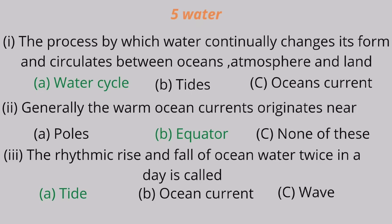Question 2: Generally, the warm ocean currents originate near A. poles, B. equator, C. none of these. The correct answer is equator.